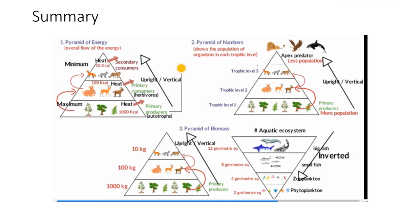In summary: the pyramid of energy is always upright; the pyramid of numbers is also always upright except in a singular-tree ecosystem; and the pyramid of biomass is upright for grassland ecosystems but inverted for aquatic ecosystems. Thank you.